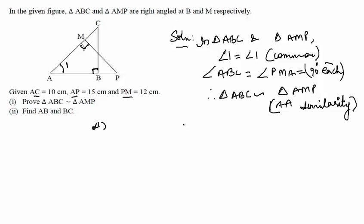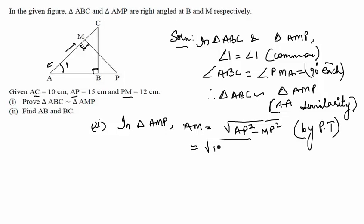Now we will head to prove the second part. To find the second part, let's first find out the value of AM. If we notice in triangle AMP, AM is equal to under root of AP square minus MP square, simple by Pythagoras theorem. So putting the value of AP 15 square minus 12 square, we get AM as 11 cm.